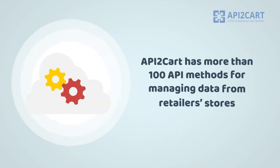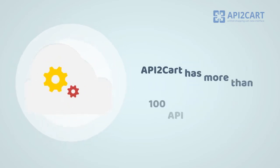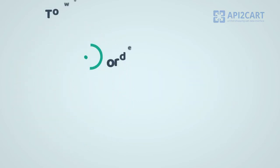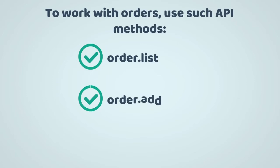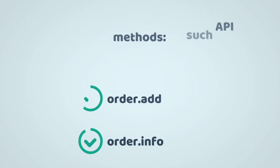API2Cart has more than 100 API methods for managing data from retailers' stores. You'll be able to work with orders using Order List, Order Add, and Order Info API methods provided by API2Cart.